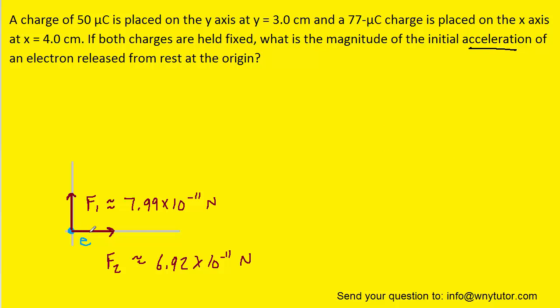To get the total force, we're going to use the Pythagorean theorem. Notice that force f2 is pointing to the right and force f1 is pointing straight up on the electron. To get the resultant force, we need to calculate this hypotenuse.